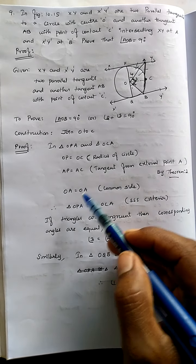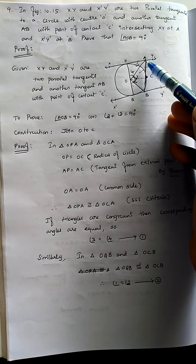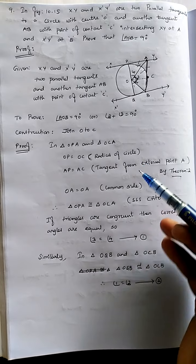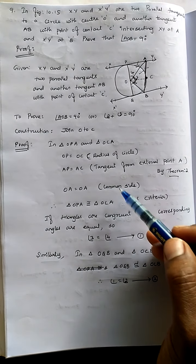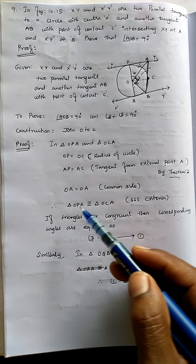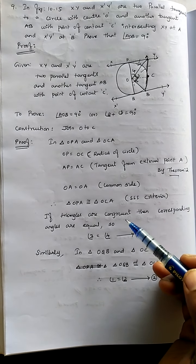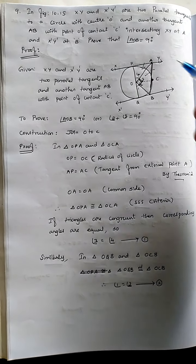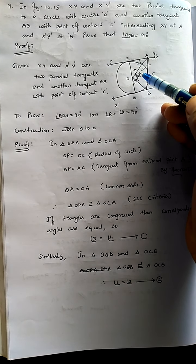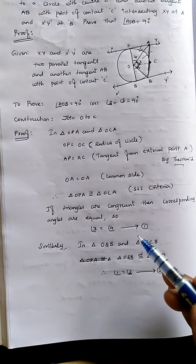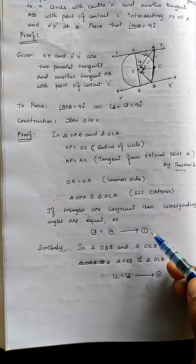OA is the common side for both triangles. Using SSS criteria, we can say these two triangles are congruent. If the triangles are congruent, corresponding sides are equal and corresponding angles are also equal. Therefore, angle 3 equals angle 4, which we can take as equation number 1.